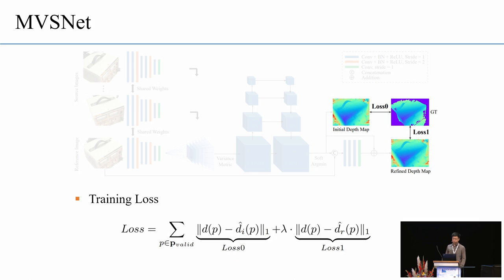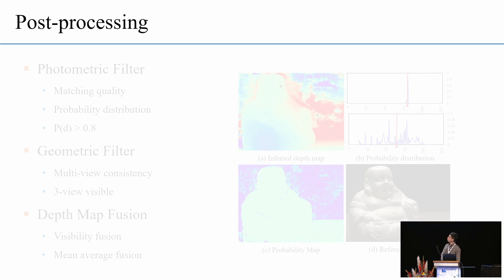For the training loss, we calculate the absolute differences between the inferred depth maps and the ground-truth depth map. The initial depth map and the refined depth map are both considered here.